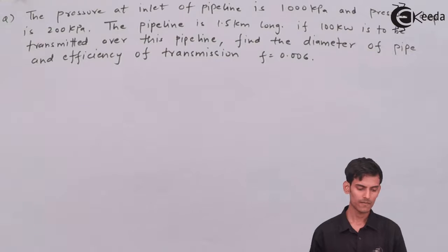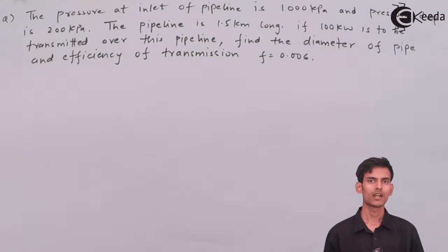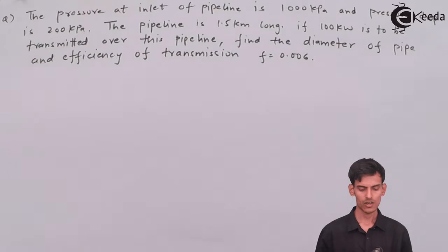So it's a bit different question. You have to find the efficiency. Earlier you had to find discharge and velocity. This question is based on power transmission and the concept of the relation between power and the friction factor. Efficiency, as you all know, is nothing but output upon input. We have to find the efficiency as well as the diameter of the pipe. First of all, let's write down the given data.